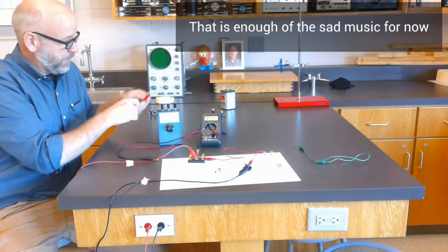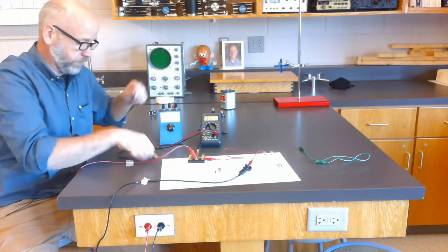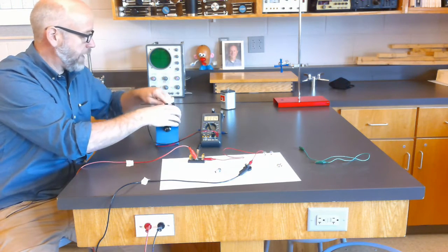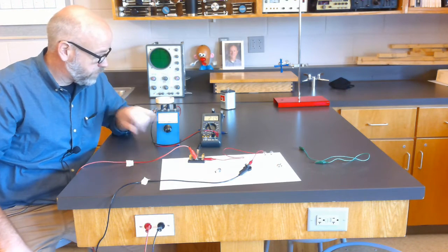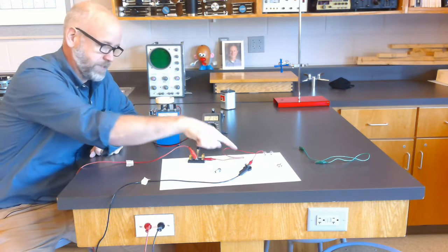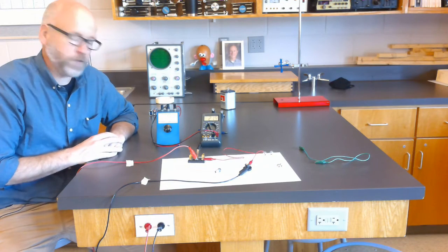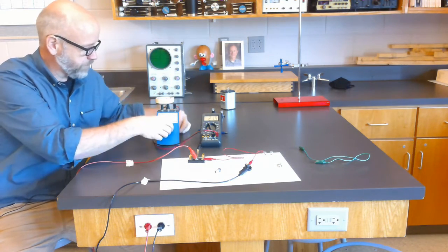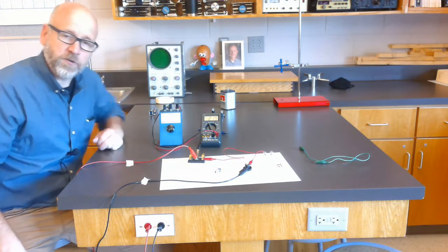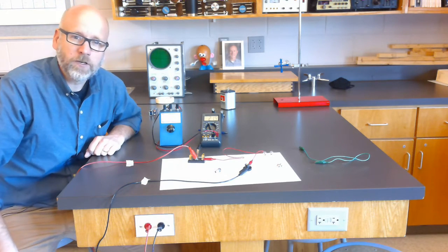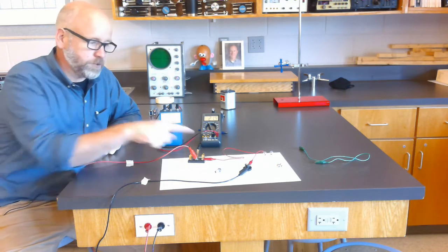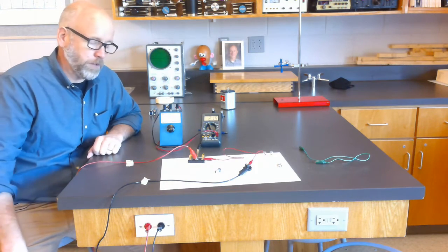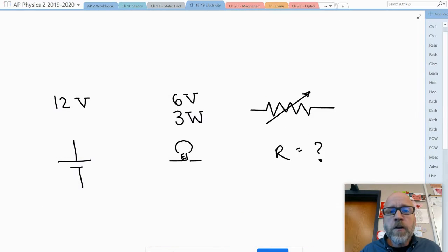I'm gonna change the setting here to be measuring ohms or resistance. I'm gonna plug it into my two terminals and adjust the resistance so that I can get six volts to drop across that bulb. Ready? So right now I need you to calculate what I should set this resistance at so that the voltage drop across the bulb is six volts.